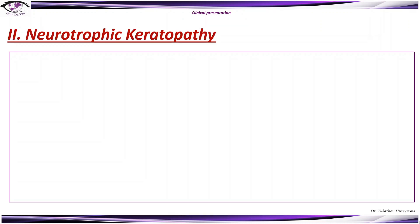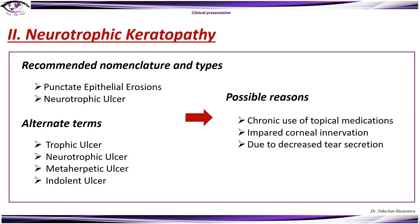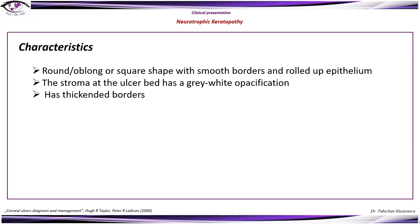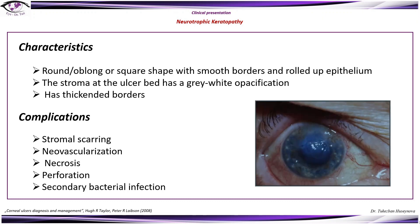Neurotrophic keratopathy classification includes punctate epithelial erosions and neurotrophic ulcer. Clinically, it can result from chronic use of topical medications, impaired corneal innervation, and decreased tear secretion. It is characterized by a round or square shape with smooth borders and rolled-up epithelium. The stroma and ulcer bed have grey-white opacification and may have thickened borders. Complications include stromal scarring, neovascularization, necrosis, perforation, and secondary bacterial infection due to damaged epithelium.